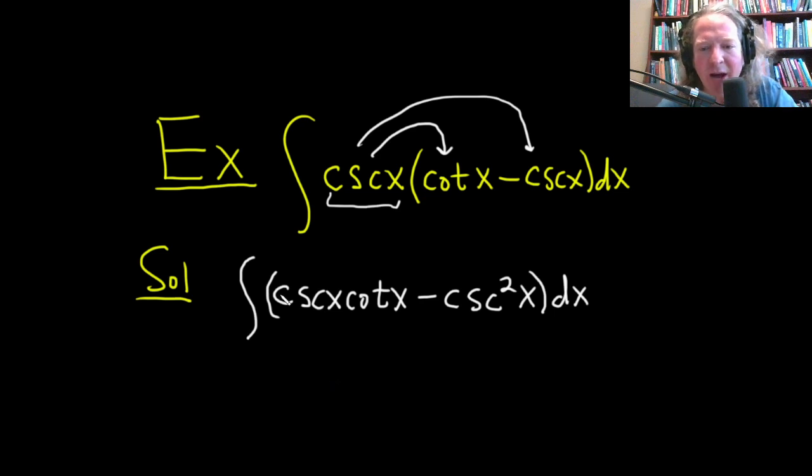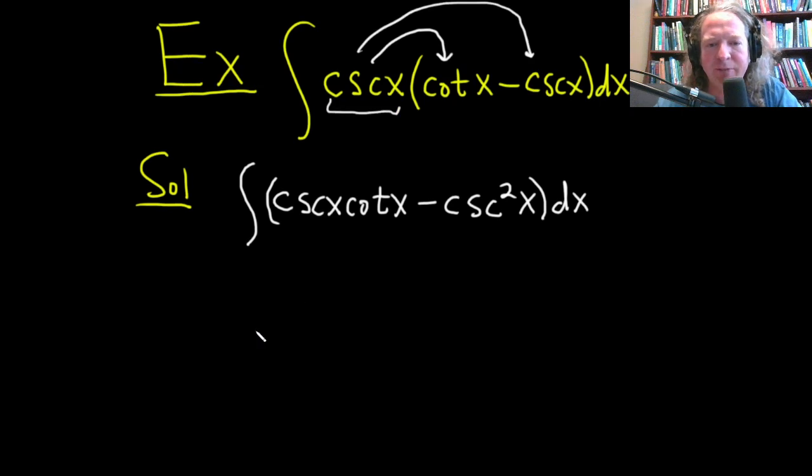Now we should be able to integrate this using some formulas. Let's integrate cosecant cotangent. When you're trying to do that, the question you want to ask yourself is: what is a function whose derivative is cosecant cotangent?